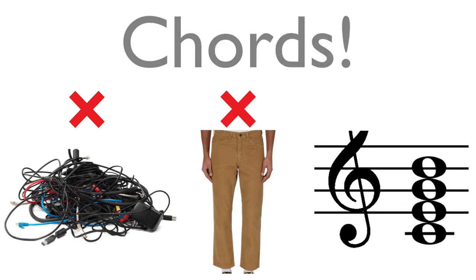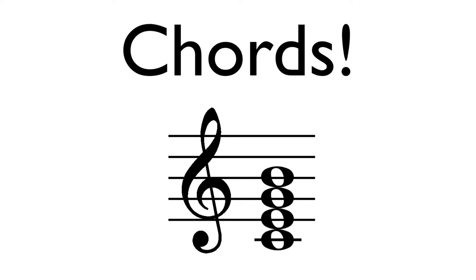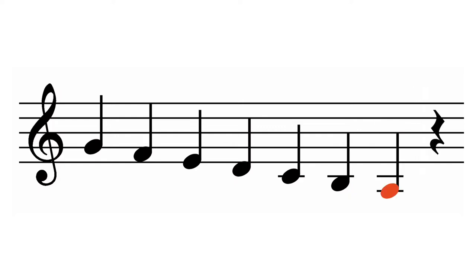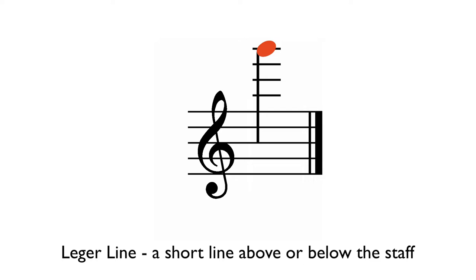In this lesson, we'll learn about chords. But first, we need some extra notes on our staff. Notice how this descending scale runs out of notes when we get to D. We can continue down the scale by using ledger lines. A ledger line is a short line written above or below the staff to extend the notes available.